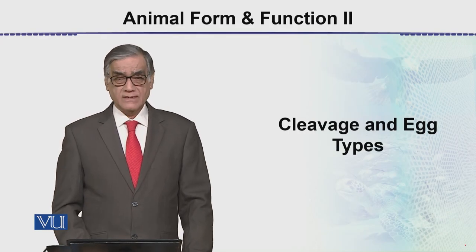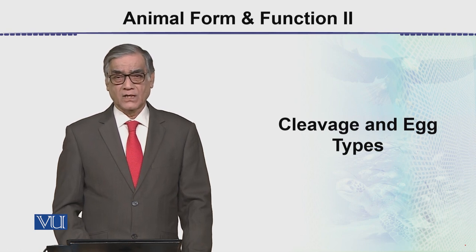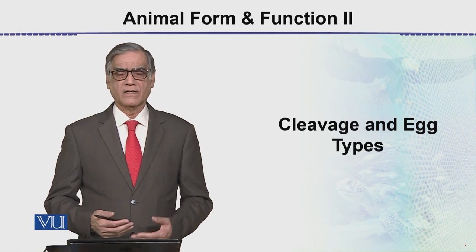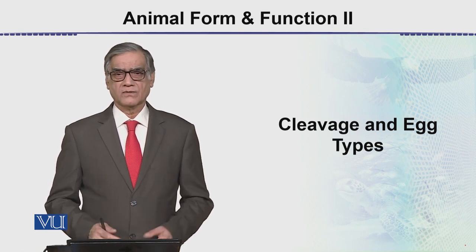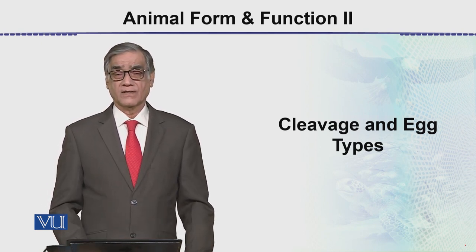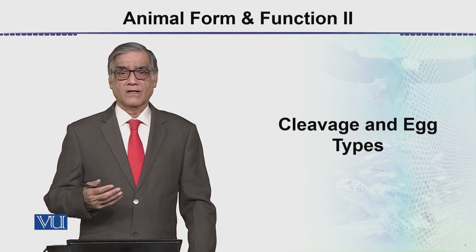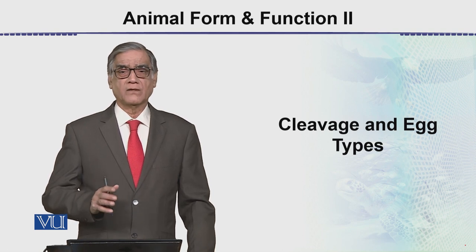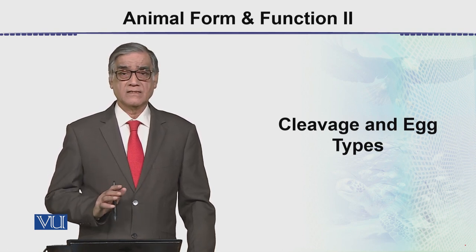Next topic is cleavage and egg types. Cleavage is in fact cell division, and it starts just after the process of fertilization. The zygote that is formed begins to divide inside the uterine wall, and this division is in fact the cleavage.